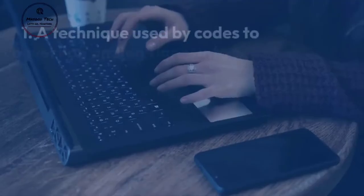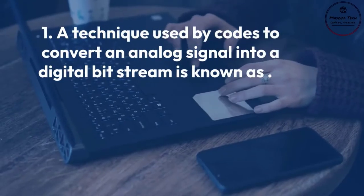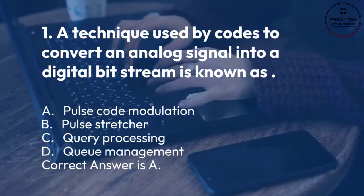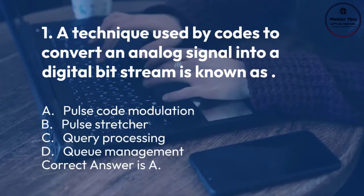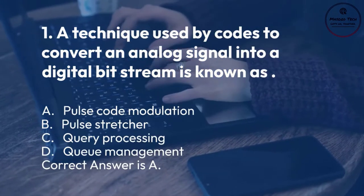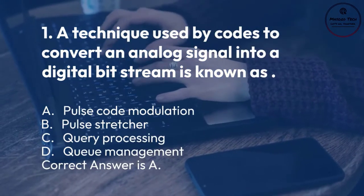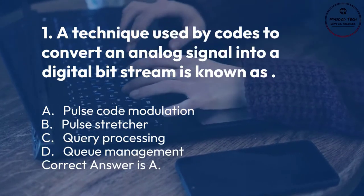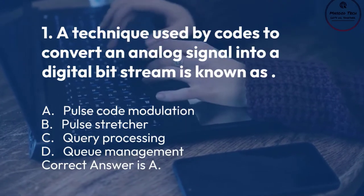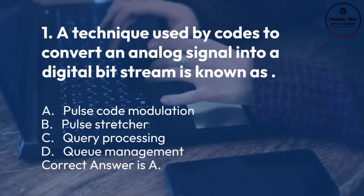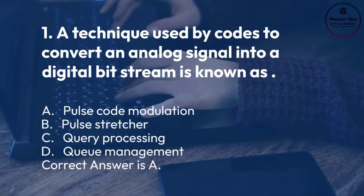Number 1. A technique used by codes to convert an analog signal into a digital bit stream is known as: A. Pulse code modulation. B. Pulse stretcher. C. Query processing. D. Queue management. Correct answer is A.